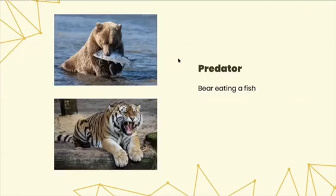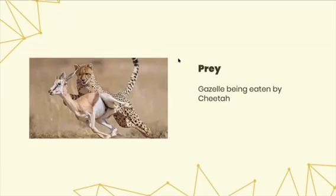A predator can be a bear eating a fish, or, as you can see, a tiger, which has many other prey that they feed off of. A prey is a gazelle being eaten by a cheetah.